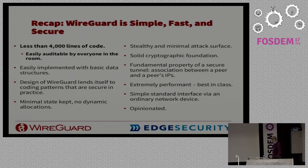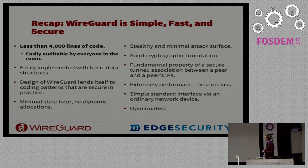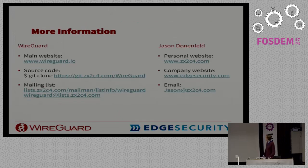To recap: less than 4,000 lines of code, which means all of you can read it — and I'd be very happy if you did, found feedback, audited it. It can be easily implemented with basic data structures. The design patterns are simple and lead to secure programming. It's stealthy, there's solid crypto, and the crypto key routing is a great simplification that lets us get rid of a lot of the layering assumptions we needed before. We have an ordinary network interface so you can use all the things you already know. It's very fast, and a lot of choices have been made for you — it's opinionated. For more information, go to wireguard.io. It's already in many distros — Debian, Gentoo, there's a Fedora package, etc. Thanks.